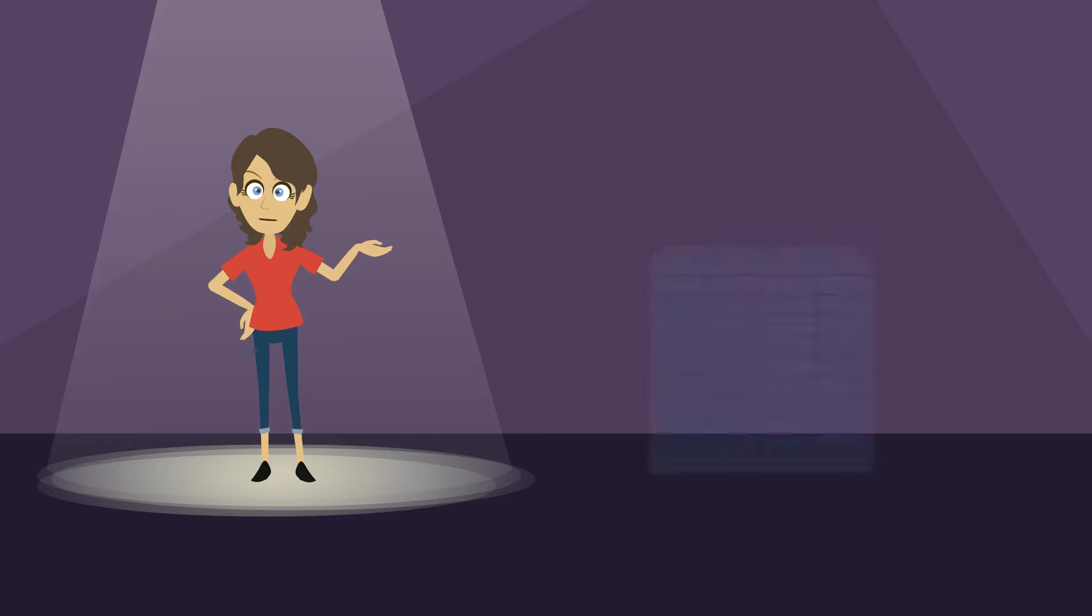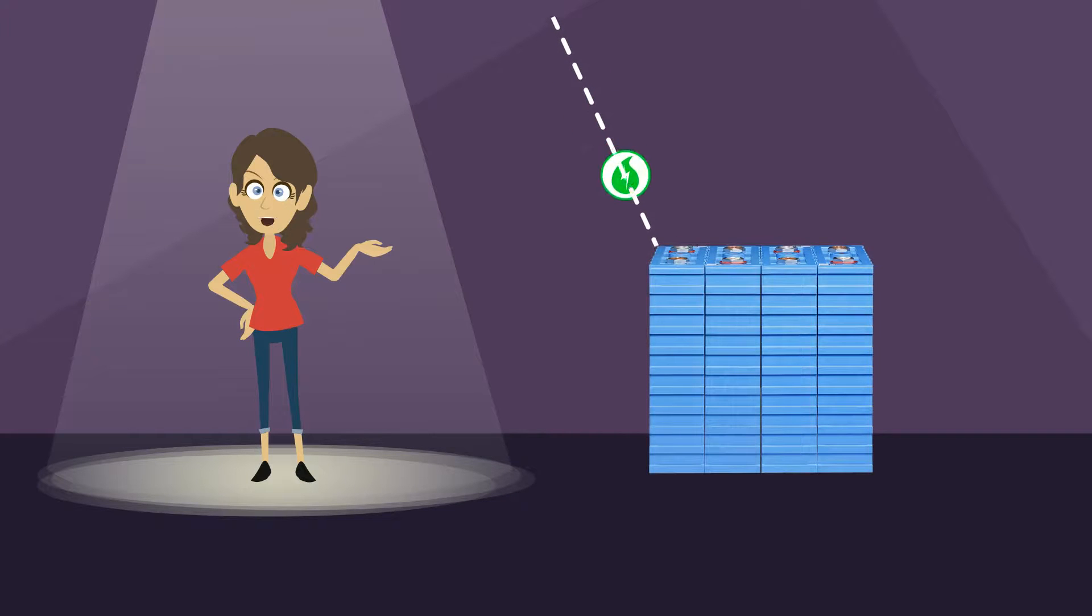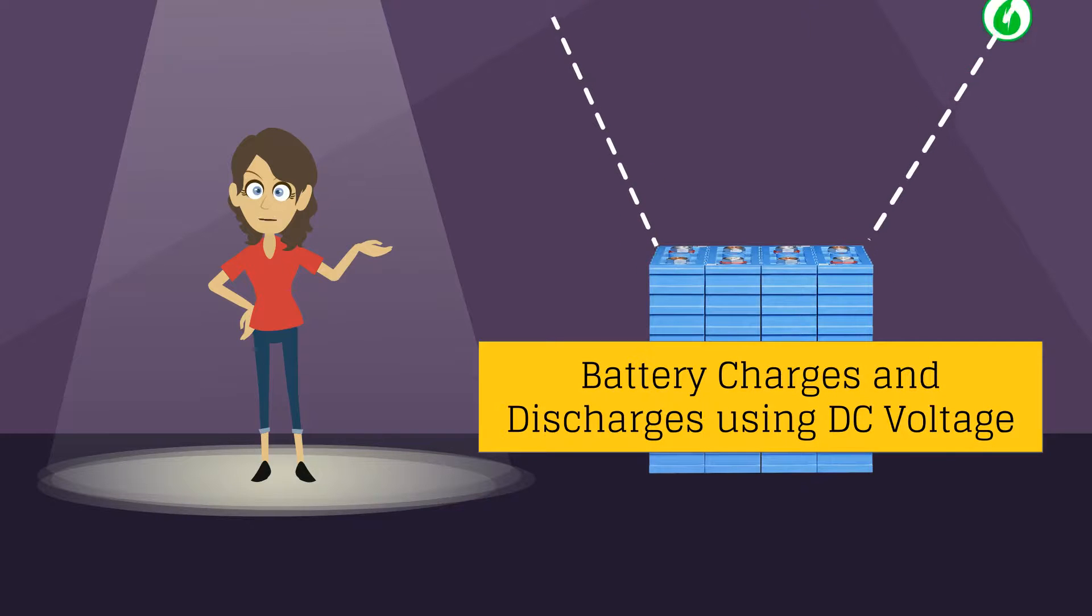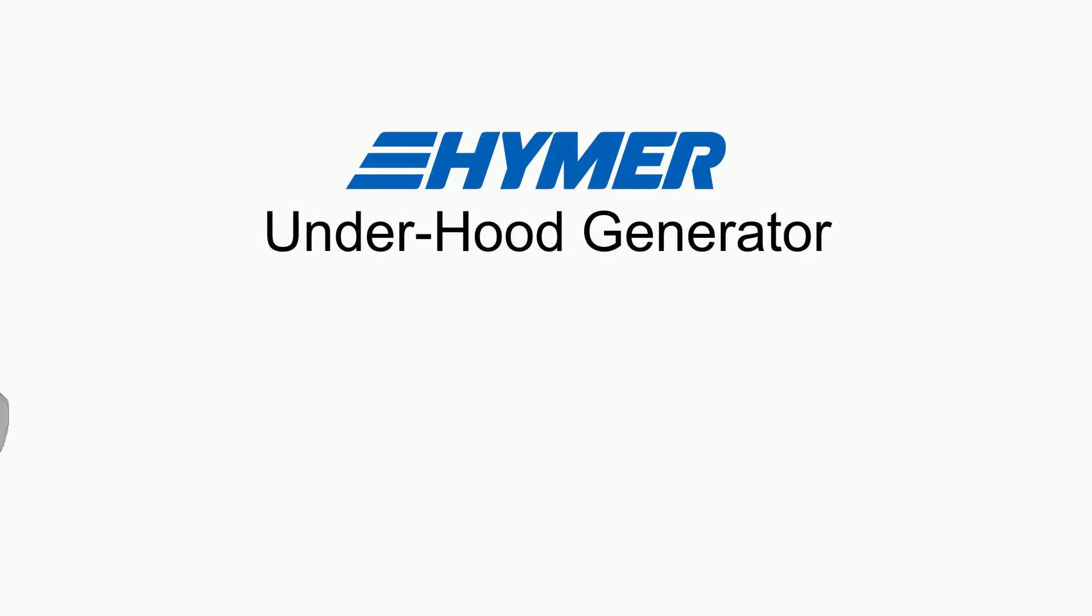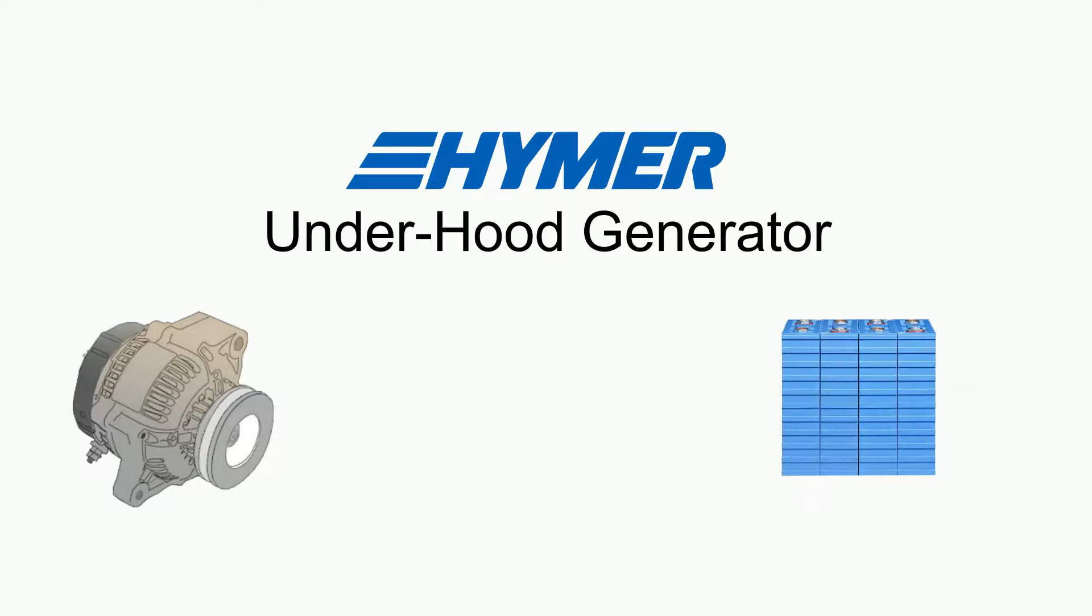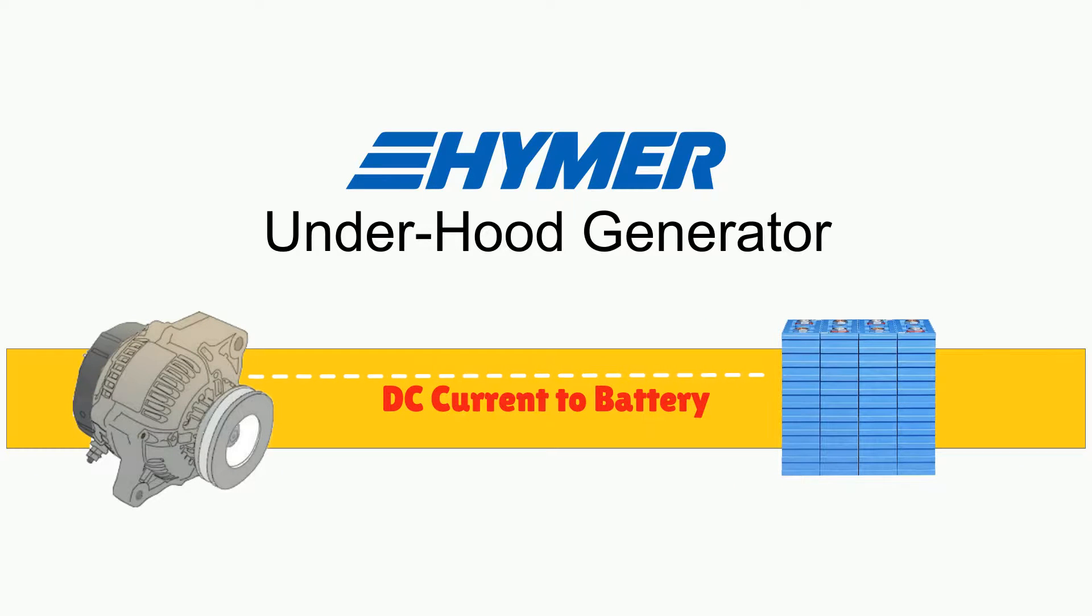And that brings us to advantage number five, efficiency. To understand just how more efficient the GU is, you need to recognize that your 12-volt RV battery system charges and discharges using DC power. The GU generates DC power and sends it directly to the batteries in a process that eliminates any loss of power along the transmission process.